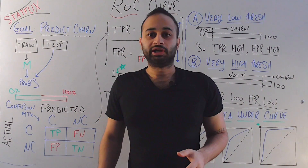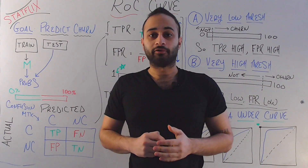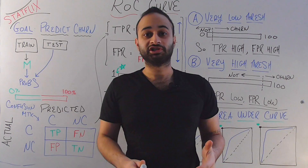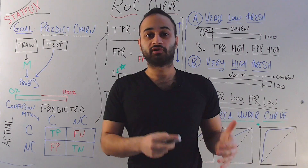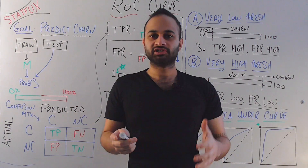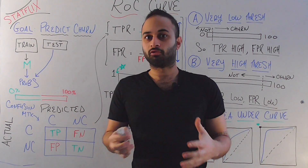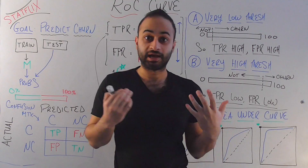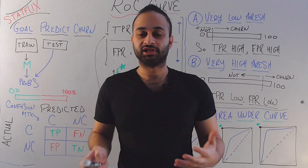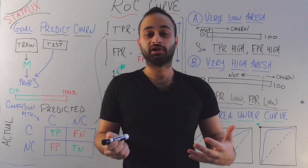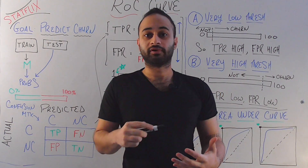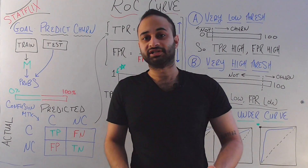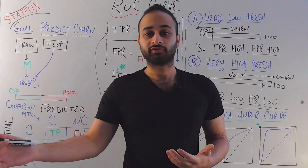Hey everyone, welcome back. Today we're going to be talking about the ROC curve, which officially stands for the Receiver Operating Characteristic. The reason I didn't write that whole phrase on the board is because it's not very helpful. Just a quick history lesson — it was called that because it was initially used by the US Army to see whether or not they were doing a good job of predicting enemy aircraft.